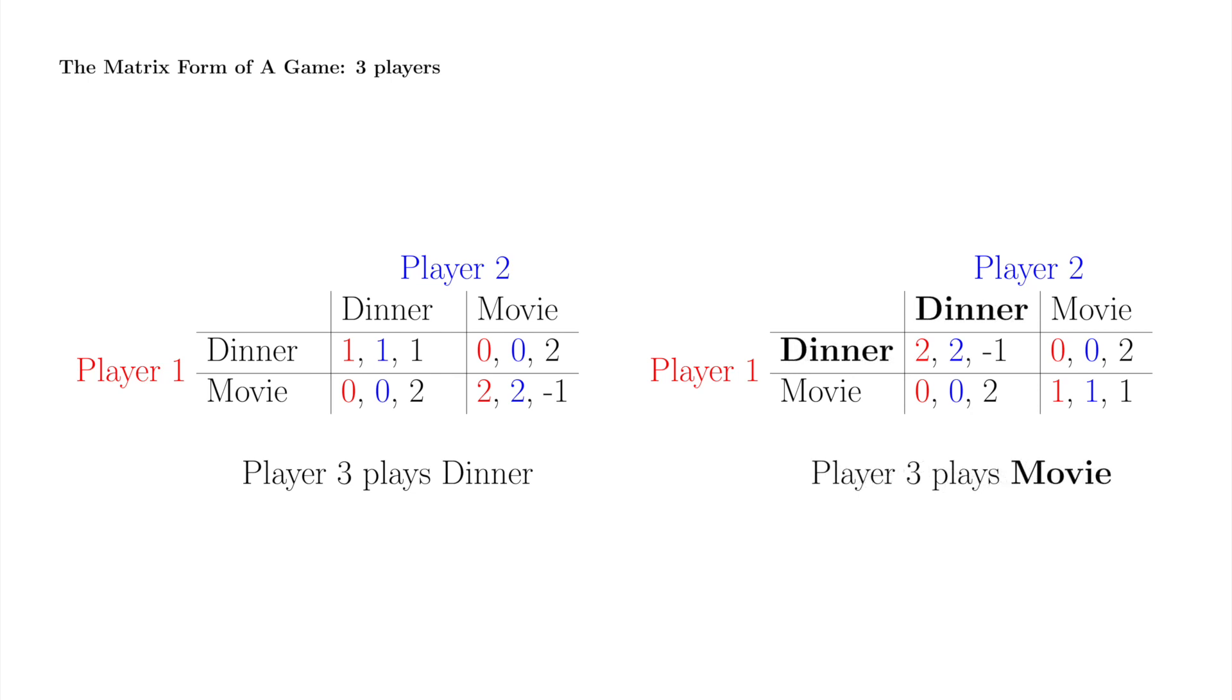Now, let's play the game. Suppose player 1 plays dinner, player 2 plays dinner, and player 3 plays movie. Player 1 receives 2, and player 2 receives 2, because they are on a date and unchaperoned. Player 3 receives minus 1, because player 3 is at the movie, and knows, since player 3 sees neither player 1 nor 2 at the movie, that they must be at dinner together, and unsupervised at that.